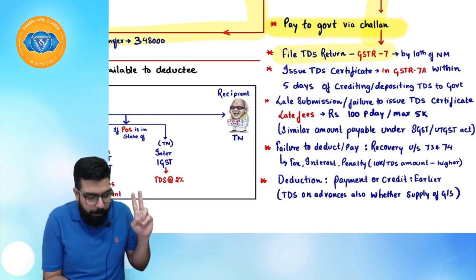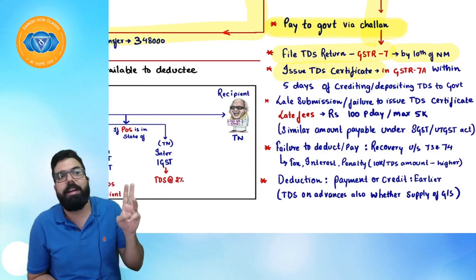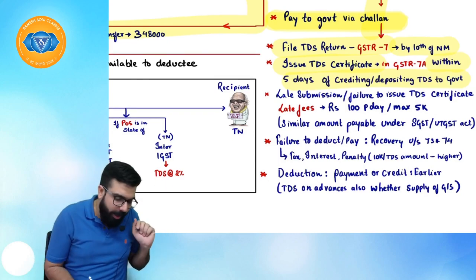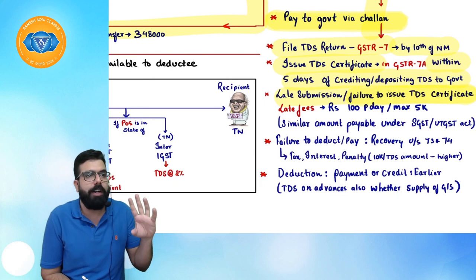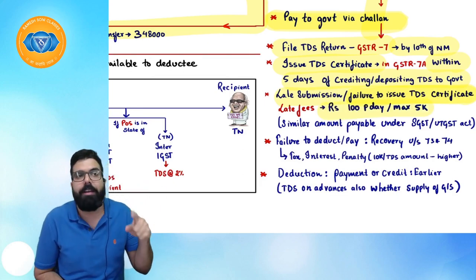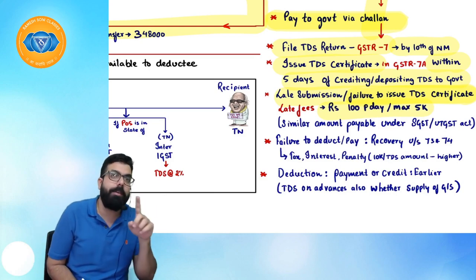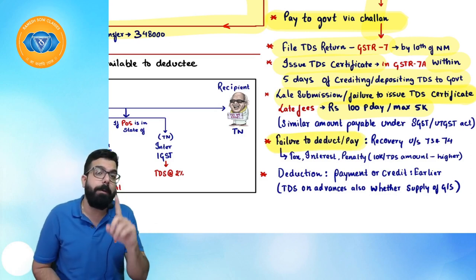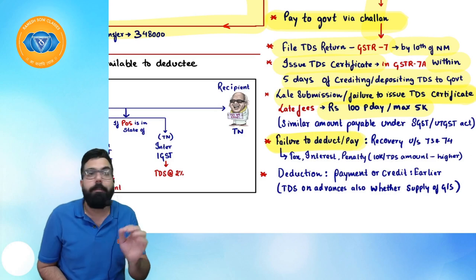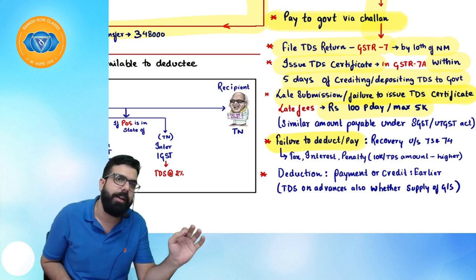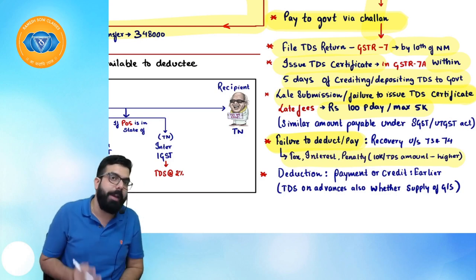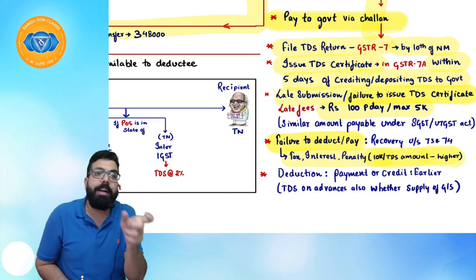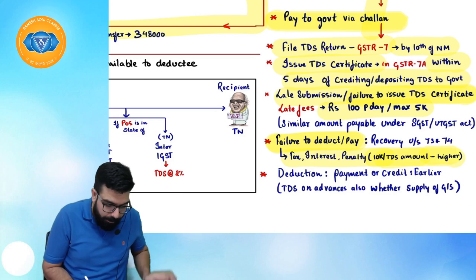The government department must file TDS return GSTR-7 by the 10th of the next month and issue a TDS certificate in GSTR-7A within 5 days of depositing TDS to the government. Failure to issue the certificate attracts a late fee of ₹100 per day subject to a maximum of ₹5,000 (same under SGST Act). Failure to deduct triggers recovery proceedings under Section 73 and 74, with penalty of ₹10,000 or TDS amount whichever is higher.